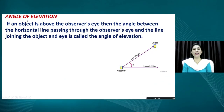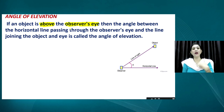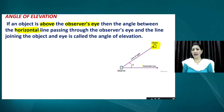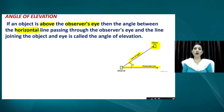We studied two key things in our previous session: angle of elevation and angle of depression. The angle of elevation is formed when an object is above the observer's eye level. The angle is measured between the horizontal line — the eye level of the viewer — and the line of sight toward the object. This angle between these two lines is known as the angle of elevation.